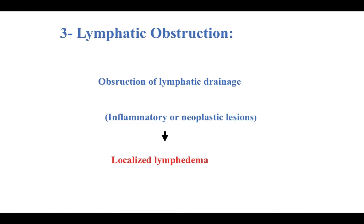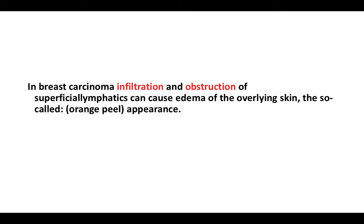Regarding lymphatic obstruction: obstruction of lymphatic drainage prevents the lymphatics from returning fluid from the interstitial tissue back to the blood. If lymphatic drainage is obstructed — whether by inflammatory or neoplastic causes — this results in localized edema. Lymphatic obstruction can be seen in breast carcinoma, where infiltration and obstruction of superficial lymphatics causes edema of the overlying skin of the breast.